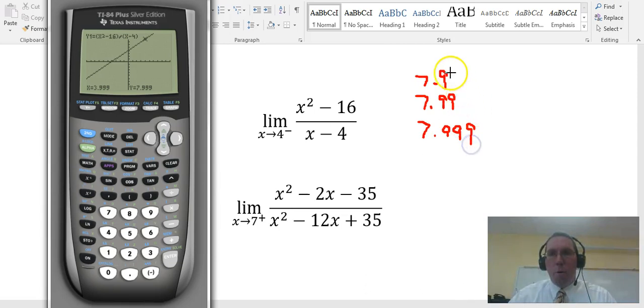And so what is our output getting closer to here? It's getting closer to 8. Therefore, the answer to this limit, this one-sided limit, must be 8.